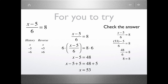By now you may be able to do some of these without doing a history, and that's fine. For x minus 5 over 6 equals 8: the history is subtract 5, then divide by 6. The inverse and reverse is multiply by 6, then add 5. We multiply each side by 6 to get x minus 5 equals 48, then add 5 to each side to get x equals 53. Checking: 53 minus 5 over 6 is 48 over 6 equals 8. Our solution is correct.